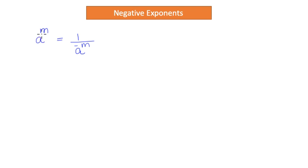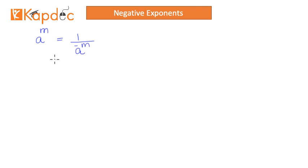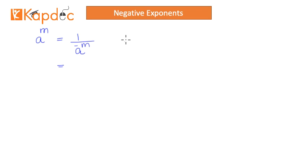Meaning, whenever something is in the numerator, the power of that number becomes negative when that number goes in the denominator. This is a unique concept that you would like to remember always, and it will be very useful whenever you are dealing with negative exponents.